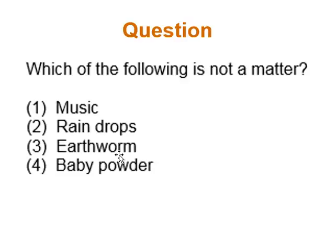The third option is earthworms. Do earthworms have mass? Earthworms are very tiny, but if you collect enough of them in a container and put it on a weighing scale, there will be weight — so they do have mass. Likewise, if we collect enough earthworms in a container, there will come a point where no more earthworms can fit because they occupy space. So the more earthworms we have, the more space they occupy. Therefore, earthworms have mass and occupy space.